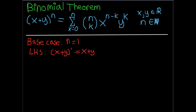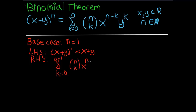On the right hand side, we see that the summation of k equals 0 to n equals 1 gives us x to the n minus k, y to the k. So we just evaluate it at the two terms, which is k equals 0 and k equals 1.